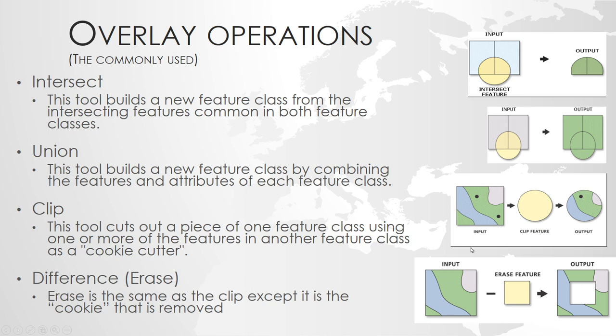So these are the basic four overlay operations, and you can really do a lot with them. In fact, you don't need all four — you can use just the union, and anything else can be generated from it because you can then filter on the attributes. But these four are basically the building blocks for a lot of GIS analysis, and it's really important that you get used to using them and understand how and when to use them.